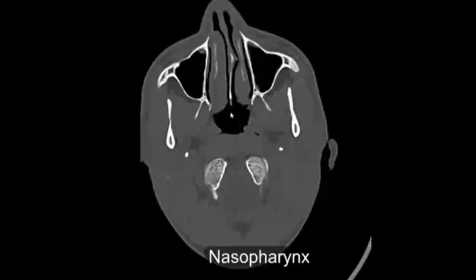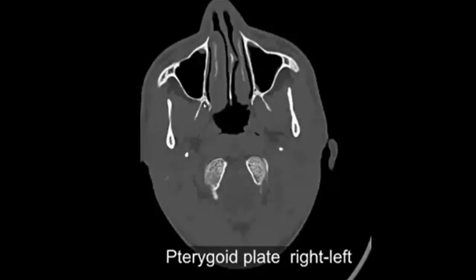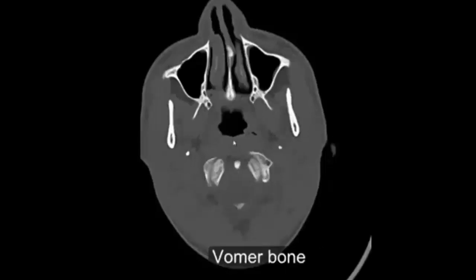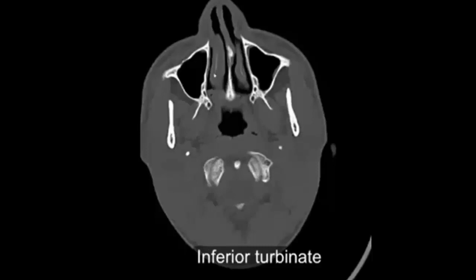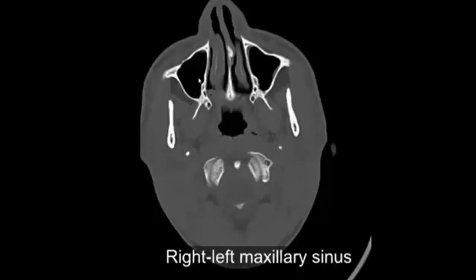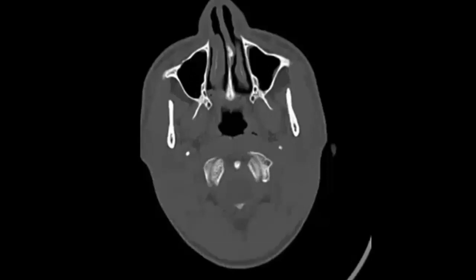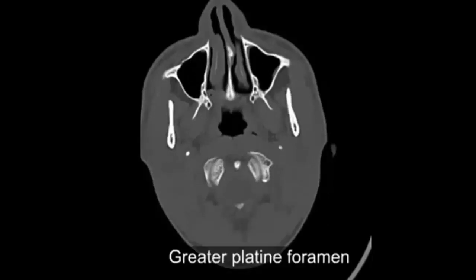Mandible, nasopharynx. Pterygoid plate, right and left. Vomer bone. Atlanto-occipital joint, right and left. Odontoid process. Nasopharynx. Vomer bone. Inferior turbinate, right and left. Maxillary sinus.